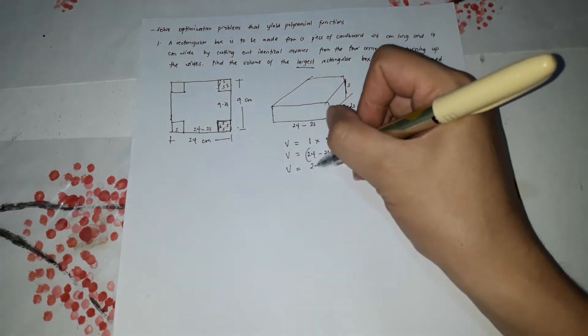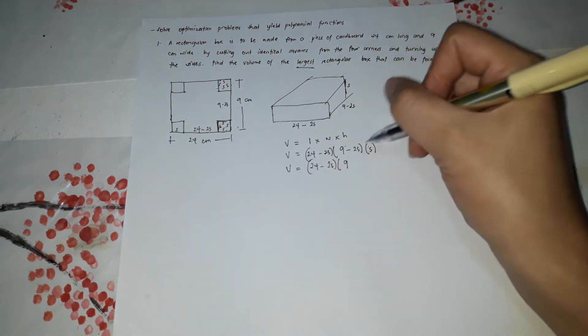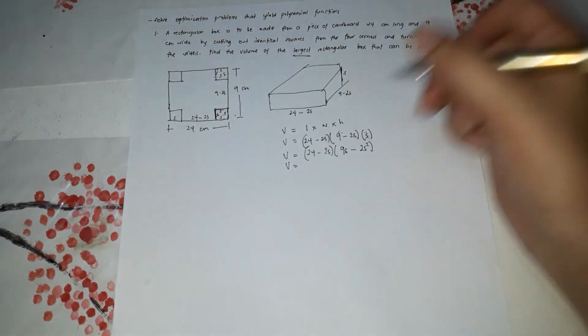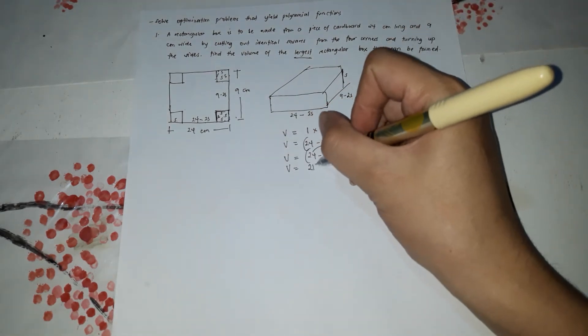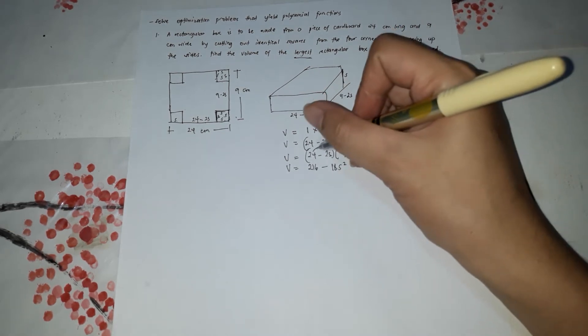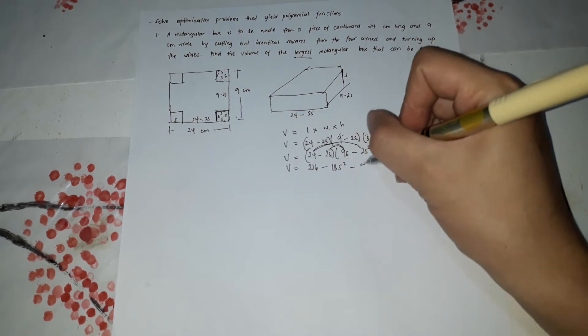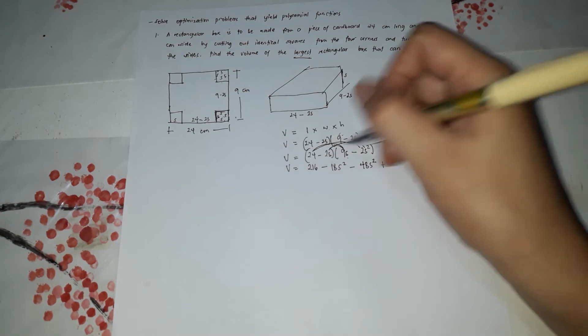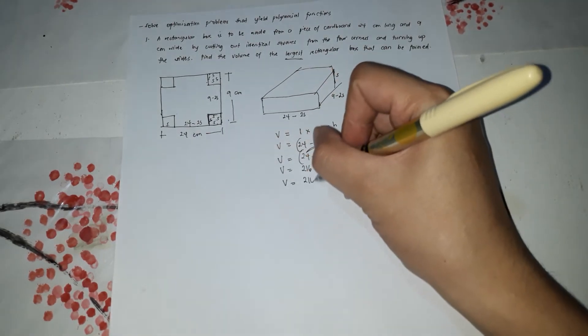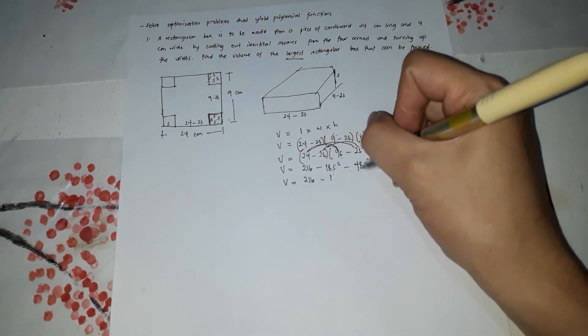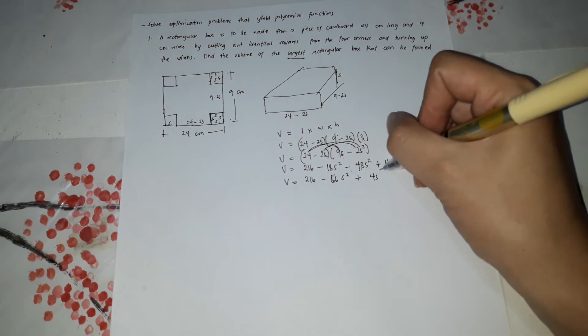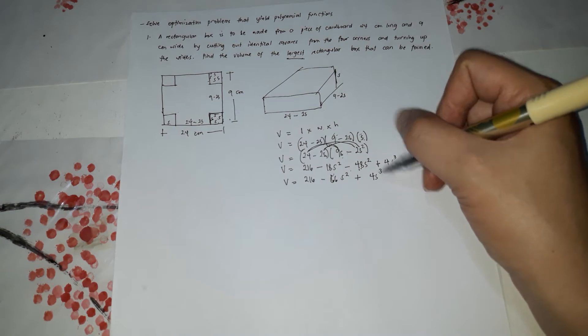So to simplify this first so that it would be easy to get the derivative. So simplify. 24 minus 2S, I'll multiply this first because it would be easier. So 9 times S is 9S, 2S times S is 2S squared. So make it a polynomial function. So 24 times 9 that's 216 minus 2 times 9 that's 18S squared. 24 times negative 2 that's negative 48S squared. 2 times 2 that's positive, negative times negative positive 4S cubed. So simplify, it's 216 minus 18, negative 18 minus 48 is negative 66S squared plus 4S cubed. So we can now find the derivative of this function because it's a polynomial function.